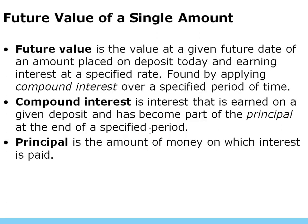Future value of a single sum — this is one of the easiest calculations. We're looking for a value in the future given the amount of interest we're going to earn over time. We're making a deposit today, earning compound interest — earning interest on our principal, and then the next year earning interest on principal plus interest. The money is growing, which we love.